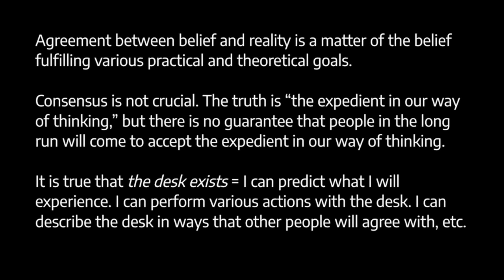A belief is in agreement with our experiential reality just when it allows us to achieve our goals and forms part of a smooth web of other beliefs. For James, consensus isn't really relevant — it's not particularly important whether or not we achieve consensus. The truth is the expedient in our way of thinking, but there's no guarantee that all people in the long run will come to accept what is expedient. Broadly speaking, Peirce gives a consensus view of truth — truth is a matter of permanently settled consensus — while James gives a kind of instrumental view: truth is what fits our experience, regardless of whether people acknowledge or agree on that.